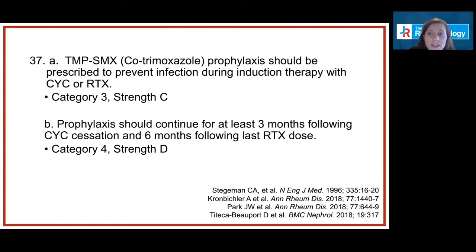The last recommendation I'll mention is from the monitoring and prevention section. We recommend that trimethoprim-sulfamethoxazole, or Septra, prophylaxis be continued in all patients receiving rituximab or cyclophosphamide induction therapy, continuing for three months after finishing cyclophosphamide and until six months has passed since the last rituximab dose was received. Aside from preventing pneumocystis pneumonia, there is data that trimethoprim-sulfamethoxazole specifically may reduce all-cause infections in patients receiving rituximab maintenance, which is one of the reasons we made this recommendation. There are other indications for PJP prophylaxis as well, including the use of high-dose corticosteroids.